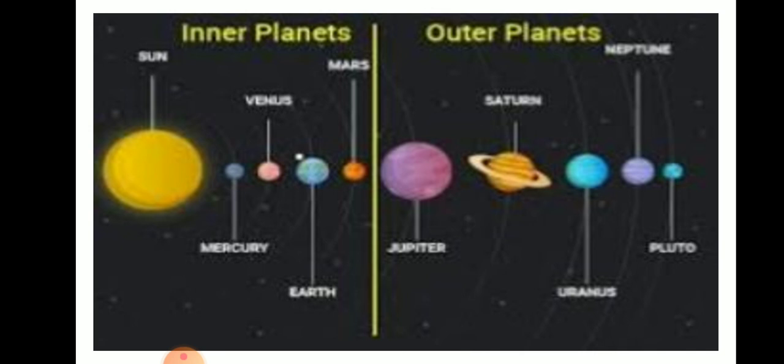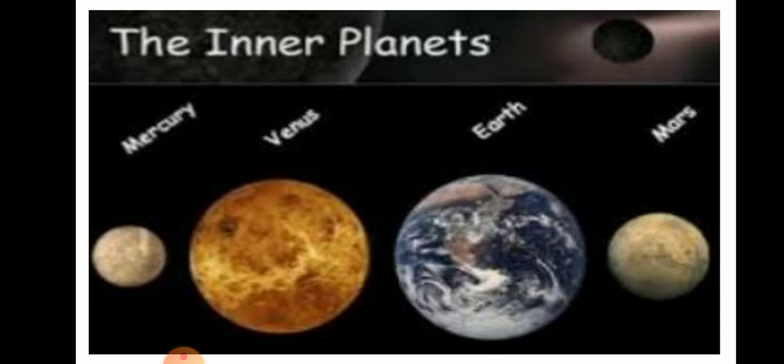These eight planets that revolve around the sun are classified into two groups: inner planets and outer planets. Mercury, Venus, Earth, and Mars are called inner planets because they are closer to the sun.